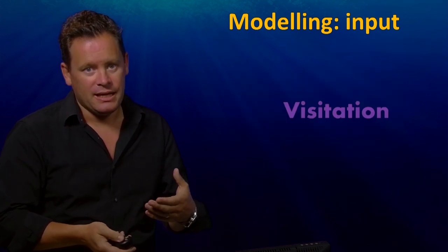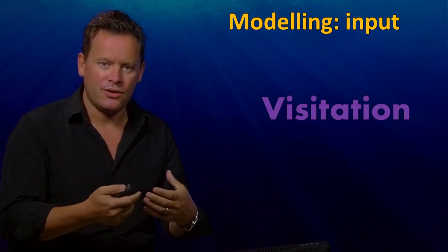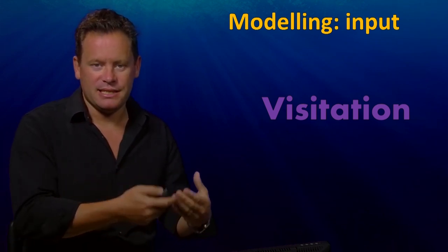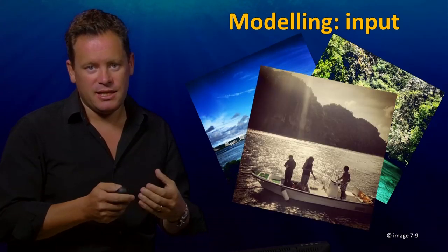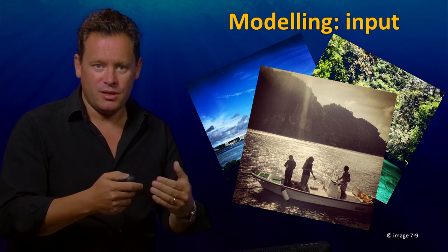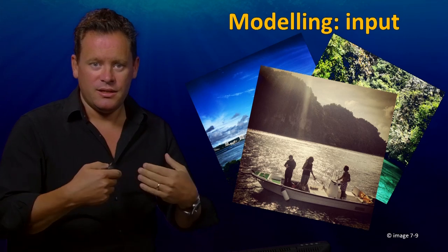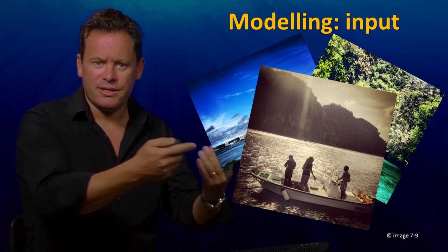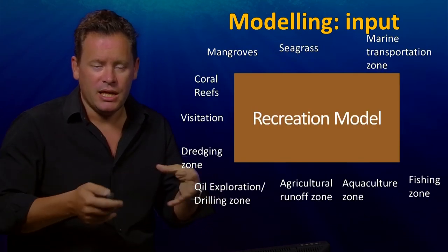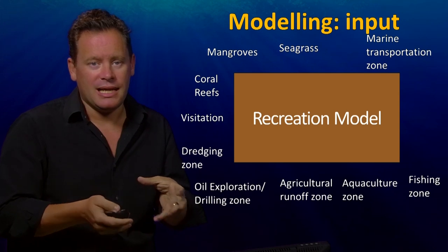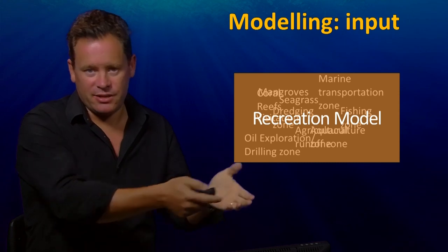One obvious input is visitation. There are a number of ways to get a handle on how people are visiting different parts of the coastal zone. One of the more innovative solutions is to take photographs that people have posted online, look at the coordinates of where they were taken, and from that derive an idea of where people prefer to visit. You take all of this information and combine it into a simple model that allows you to predict where people are going to undertake their recreation.